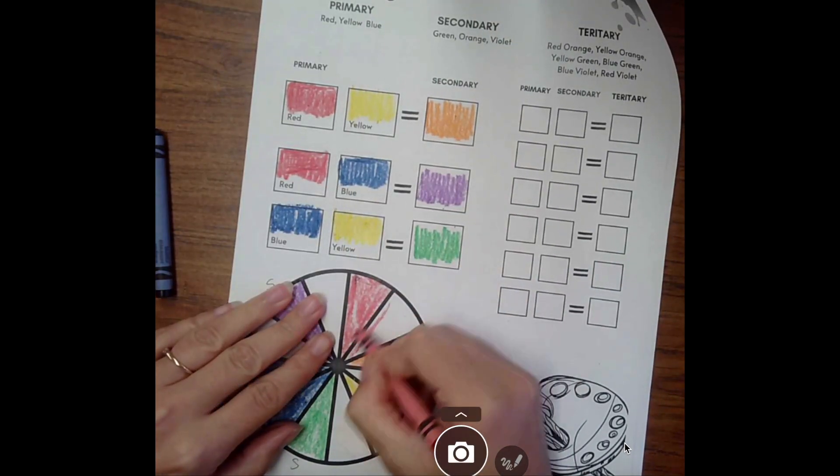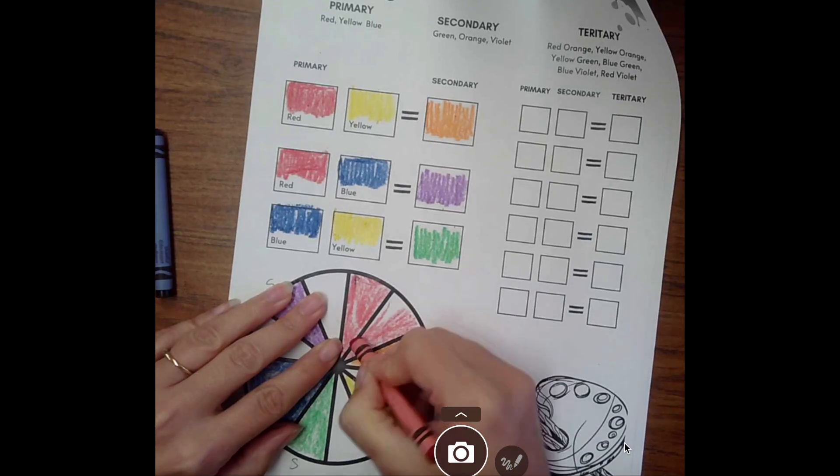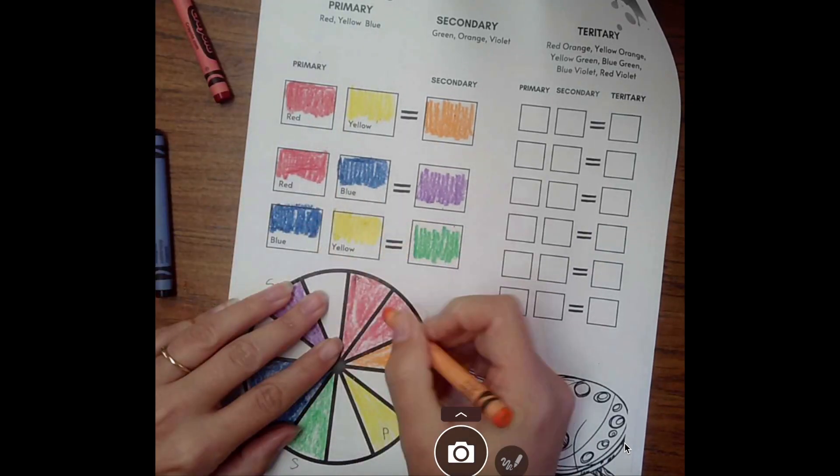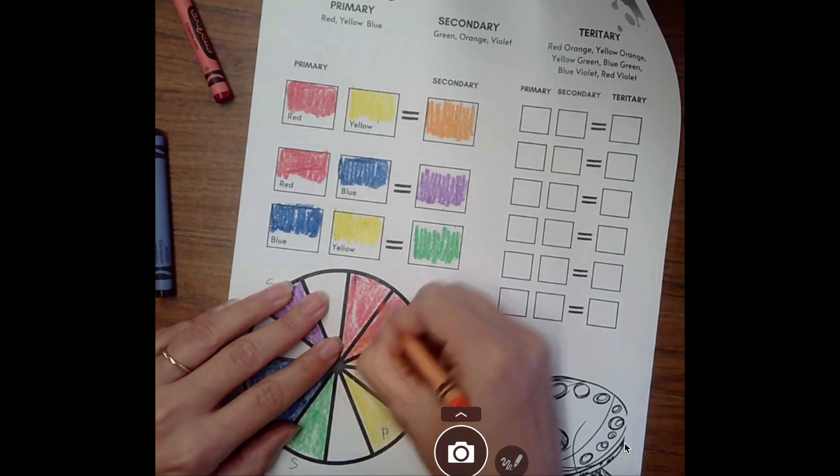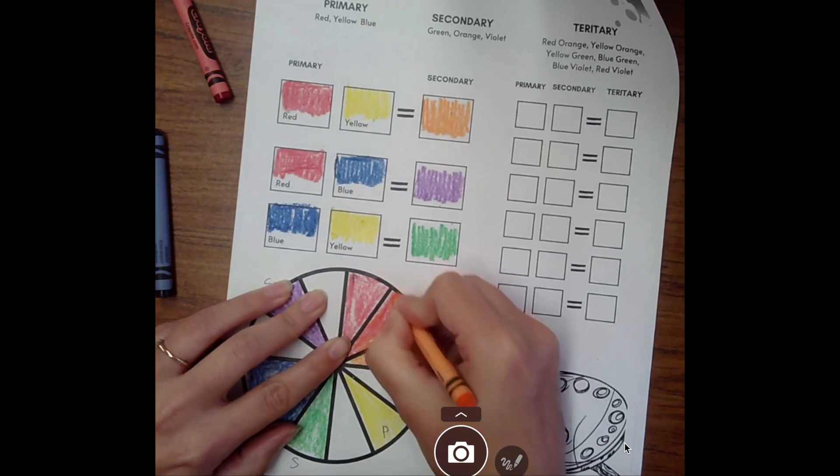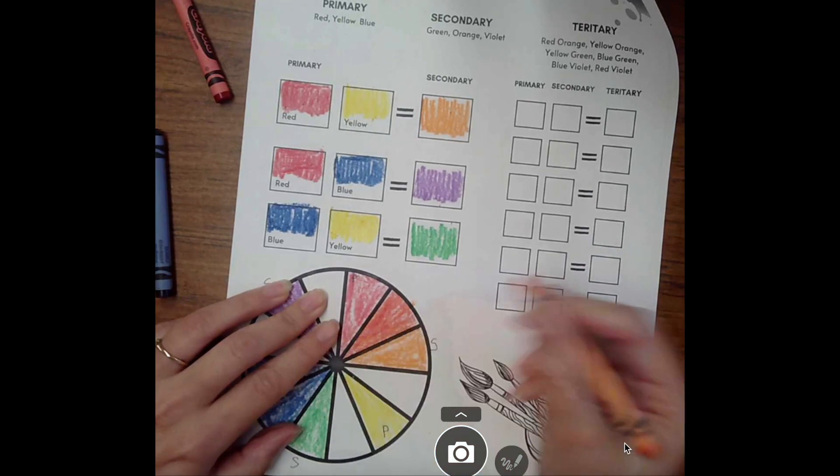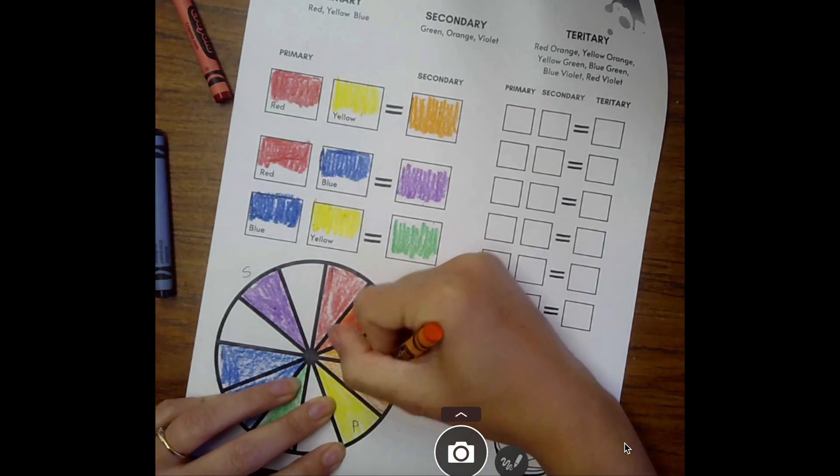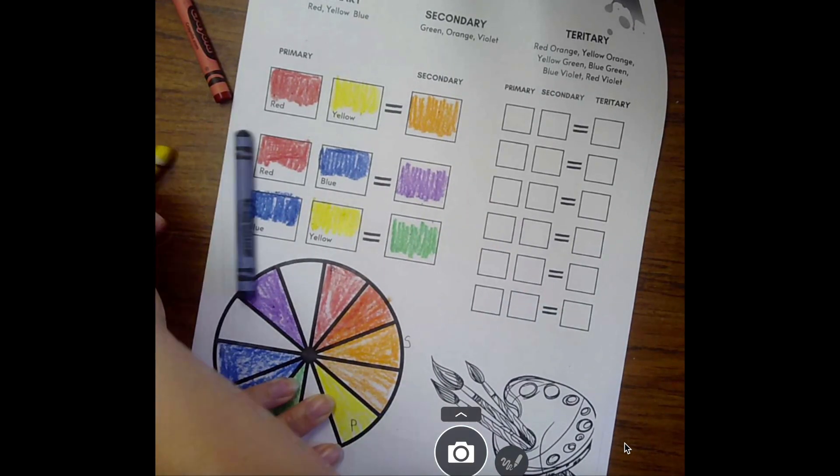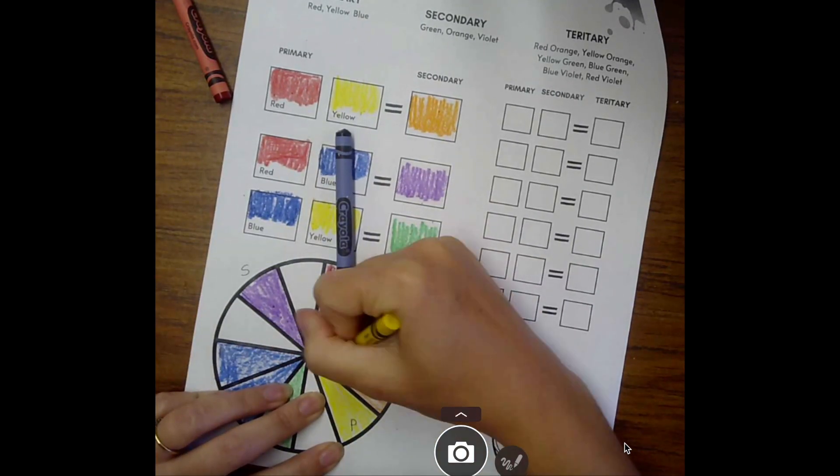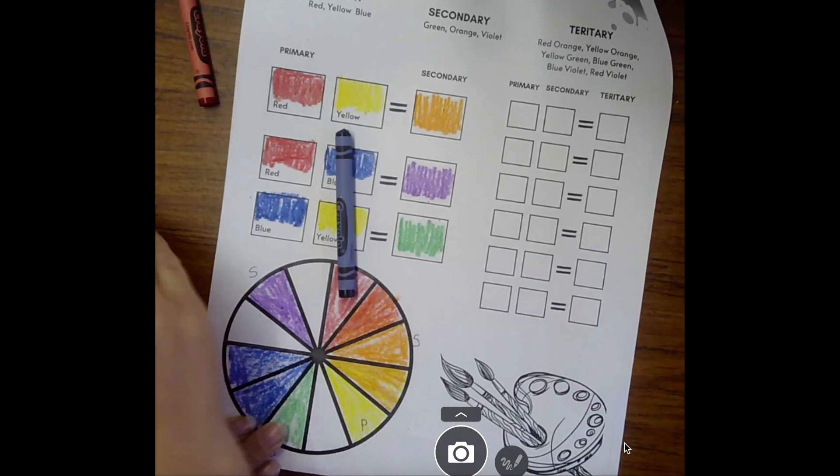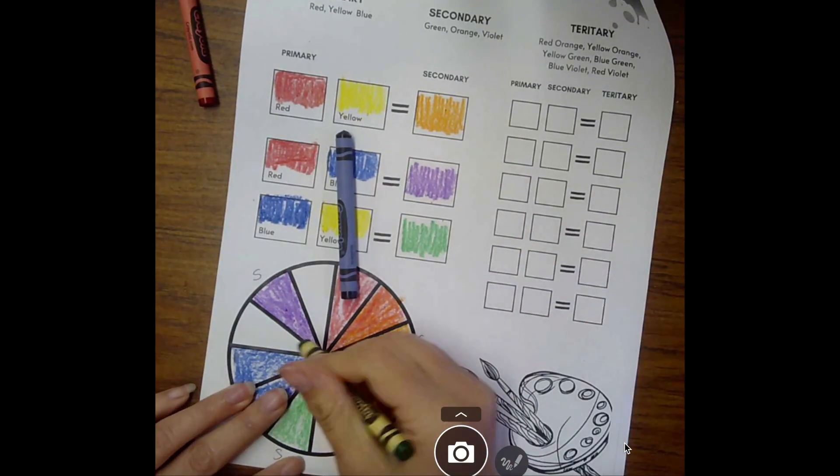Next we're going to go tertiary. So red and orange—in between them I am going to color red and then I'm going to take an orange and layer orange on top. That way I have a red-orange. Tertiary colors is a primary and a secondary mixed together. This next section I will have yellow-orange—you always say it with the primary color first. So I have orange layered with yellow. The next one will be yellow-green—green and yellow layered on top.